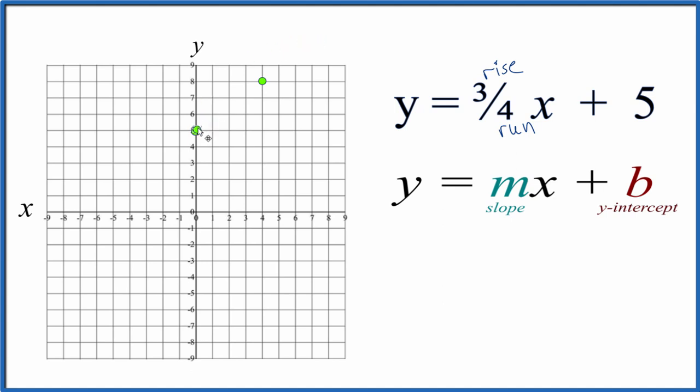Let's go the opposite direction. We'll go down 1, 2, 3, and then to the left 1, 2, 3, 4.